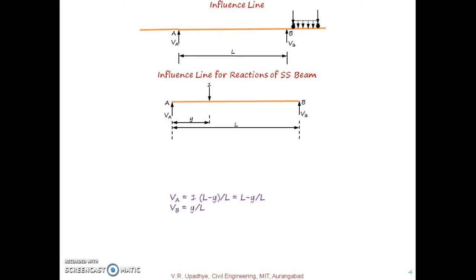Using summation of vertical forces equal to zero: VA + VB = 1, so VB = 1 − VA = 1 − (L − Y)/L = Y/L. When the unit load is at A (Y = 0), VB = 0. When the unit load is at B (Y = L), VB = 1. So with these two equations — VA = (L − Y)/L and VB = Y/L — we can calculate reactions at any position Y of the unit load.